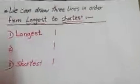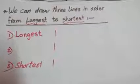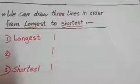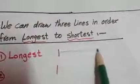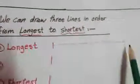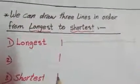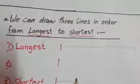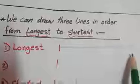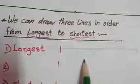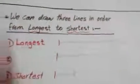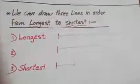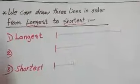And the last one — we can draw three lines in order from the longest to the shortest. We need to start from the longest one, I can draw it much bigger. Then the shortest one is very small, and the middle one is in between them. I can draw it anywhere from here to there. Got it! Now let's see our math book, page 173.